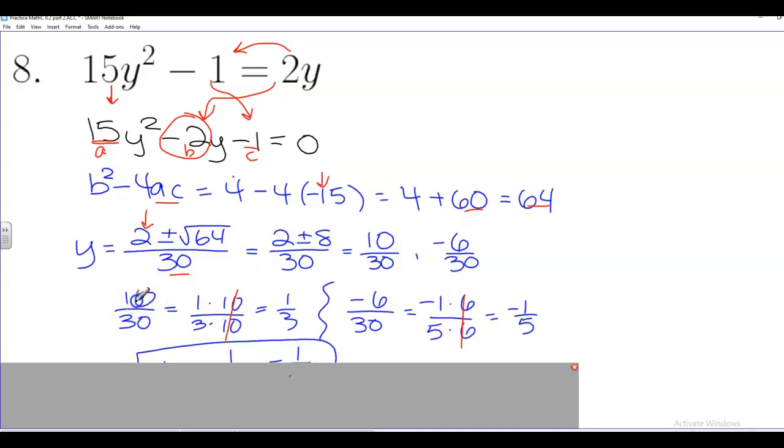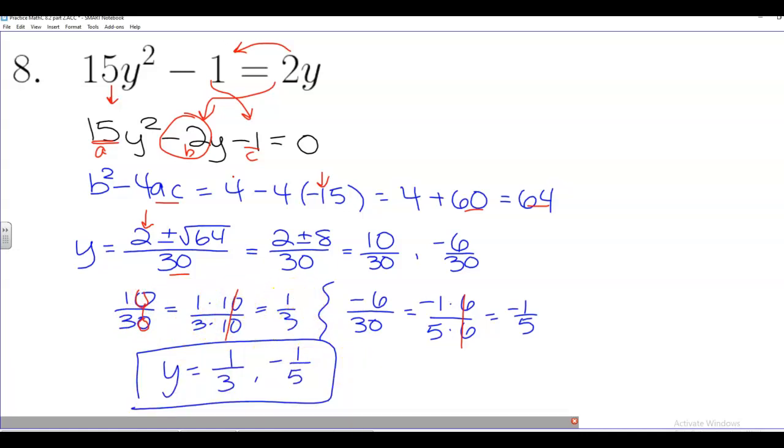So 10 over 30, they're both multiples of 10, because they both end in 0. That should be obvious, I hope. So 1 times 10, 3 times 10, the 10s cancel. I'm left with 1 third.